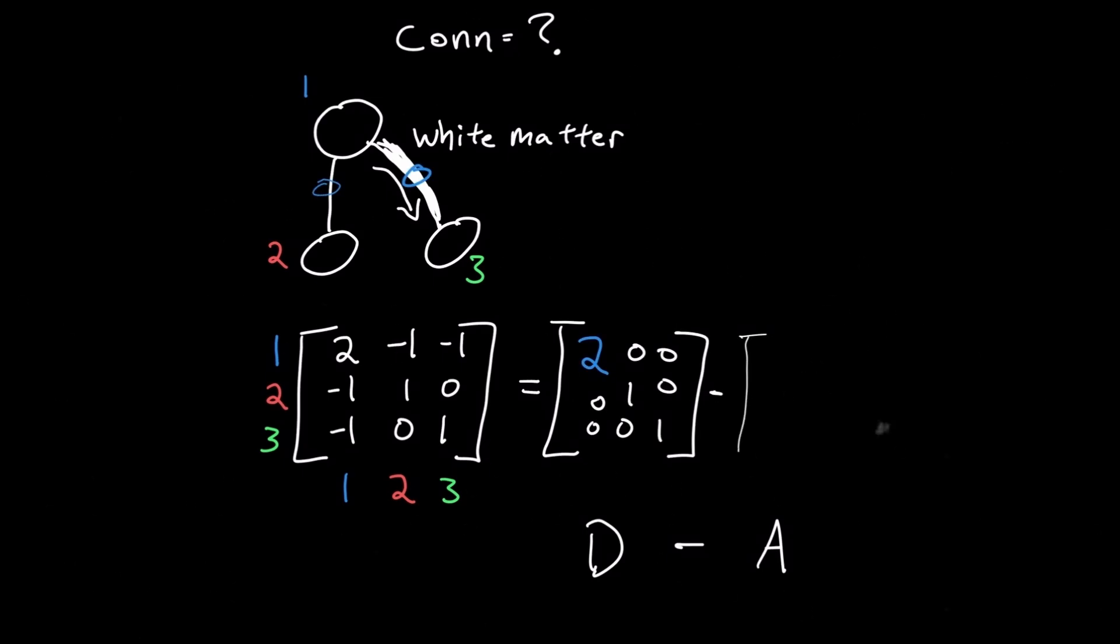A is the adjacency matrix, such that for each pair of nodes, there's a 1 if there's an edge between them, and a 0 if there's no edge between them.